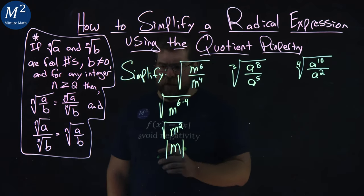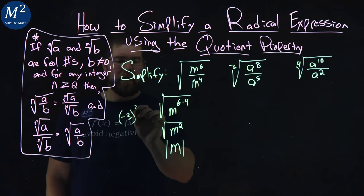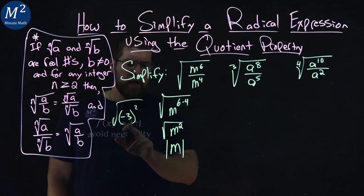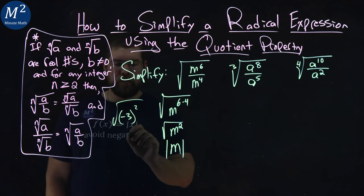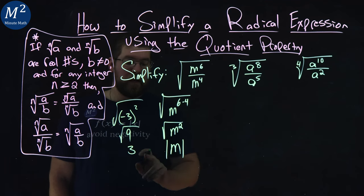For example, if I put in negative three here, let's say I square that and then take the square root of it. Negative three squared is positive nine, and then square root of positive nine is positive three. So these wouldn't really line up.